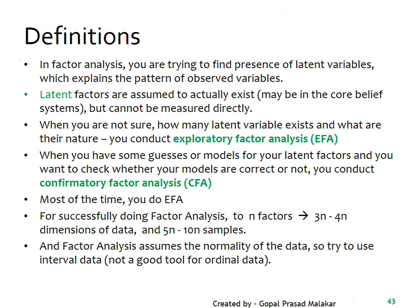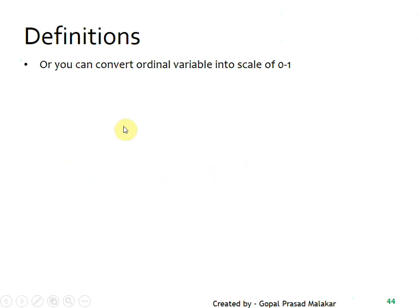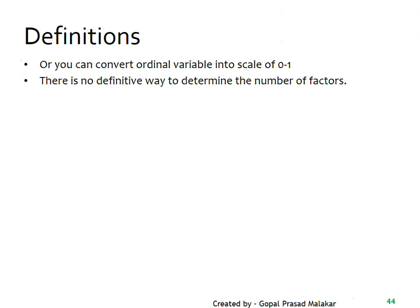You should try to use factor analysis with interval data — it's not a good tool for ordinal data. However, in practice, when you have a scale of five or more points, it can be treated as numeric data, similar to how you might convert an ordinal variable into a scale of 0 to 1.